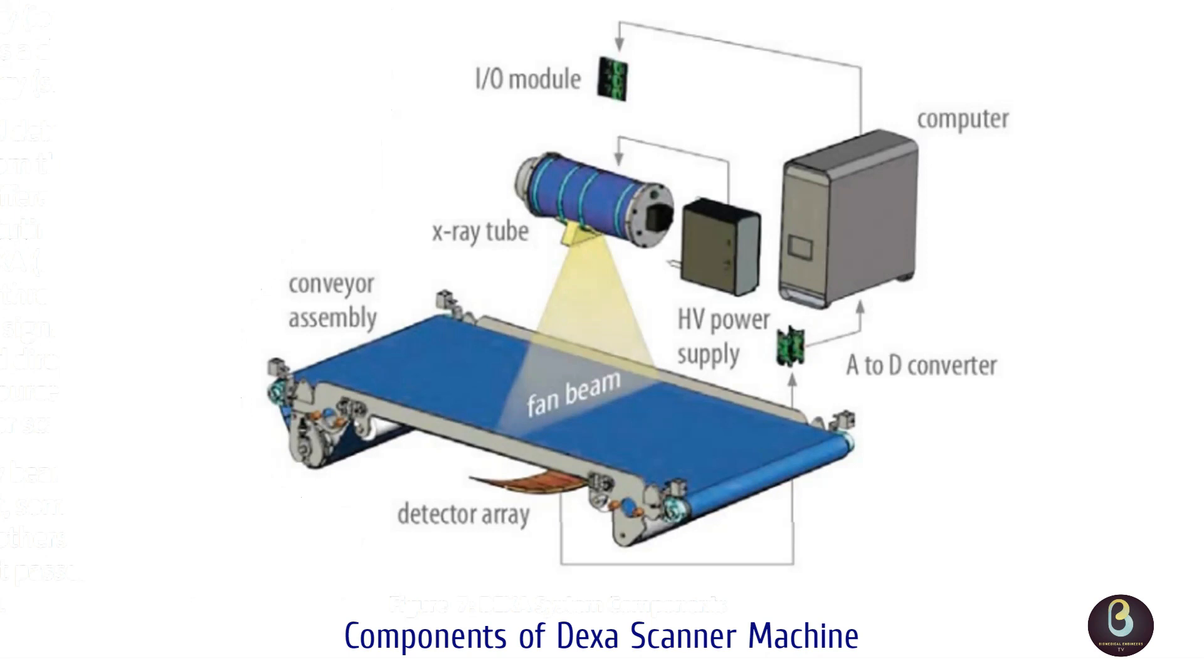Modern X-ray tubes consist of a glass envelope, a filament cathode, a copper anode, and a tungsten target. The cathode, which is the source of the electrons, is a tungsten filament, heated to incandescence by an electrical current.